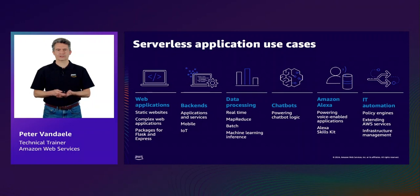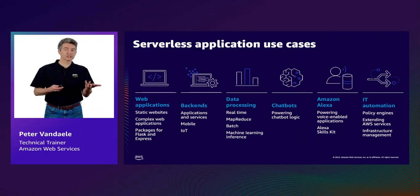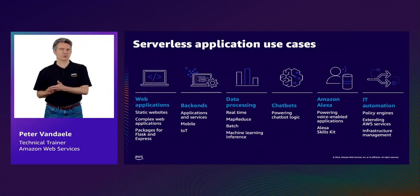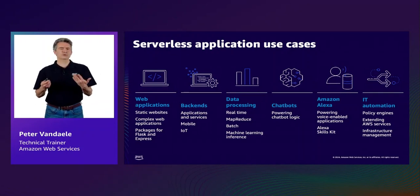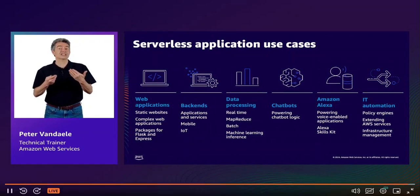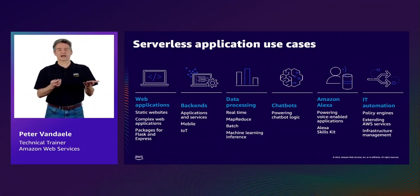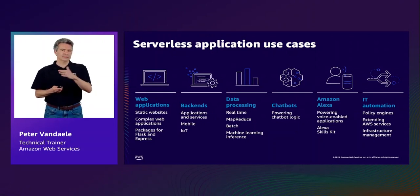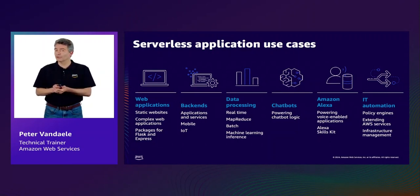Lambda is just one serverless service. You can create an entire serverless application consisting of different Lambda functions and other AWS services. Some use cases for serverless architectures are building web applications using static websites, processing data at nearly any scale, automating batch processing, indexing and storing documents and images automatically, powering chatbots, voice-enabled applications like Alexa, and IT automation. But what if you have an application consisting of microservices that need to scale very dynamically and might run longer than the maximum runtime of Lambda? This is where containers can help out.